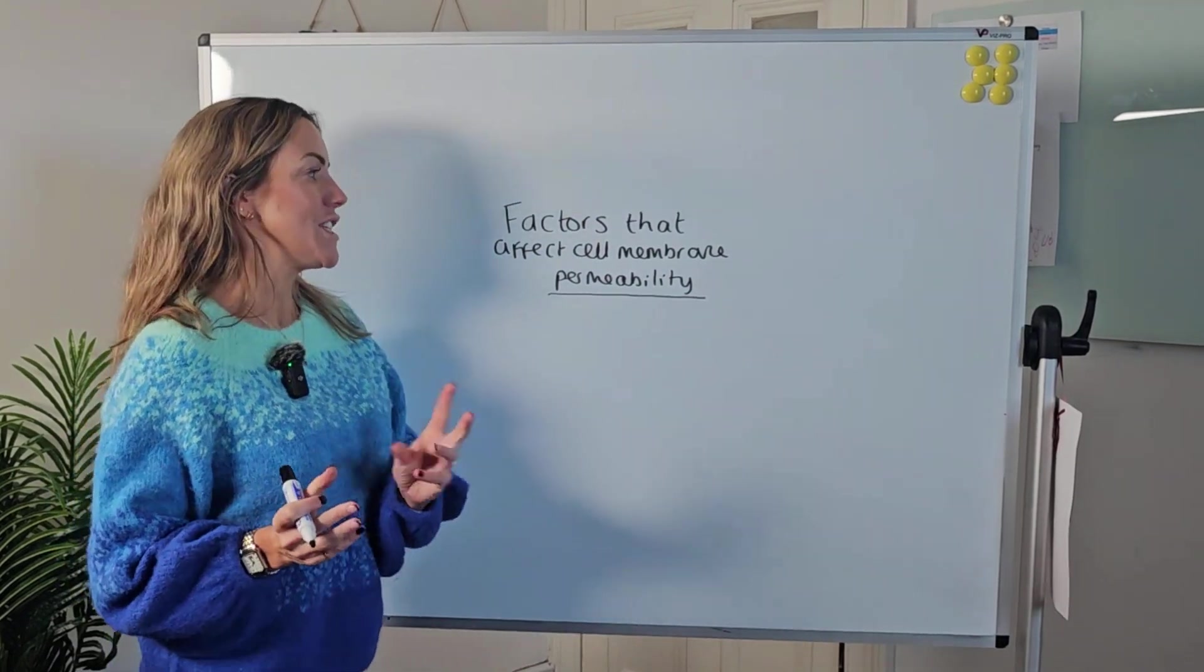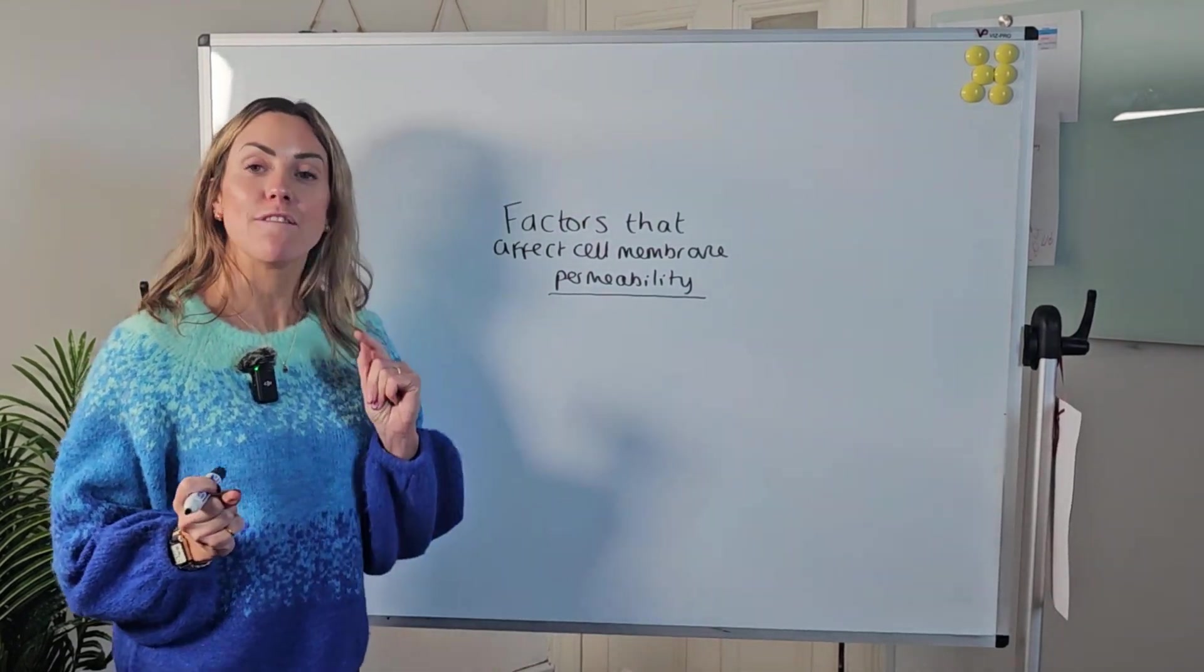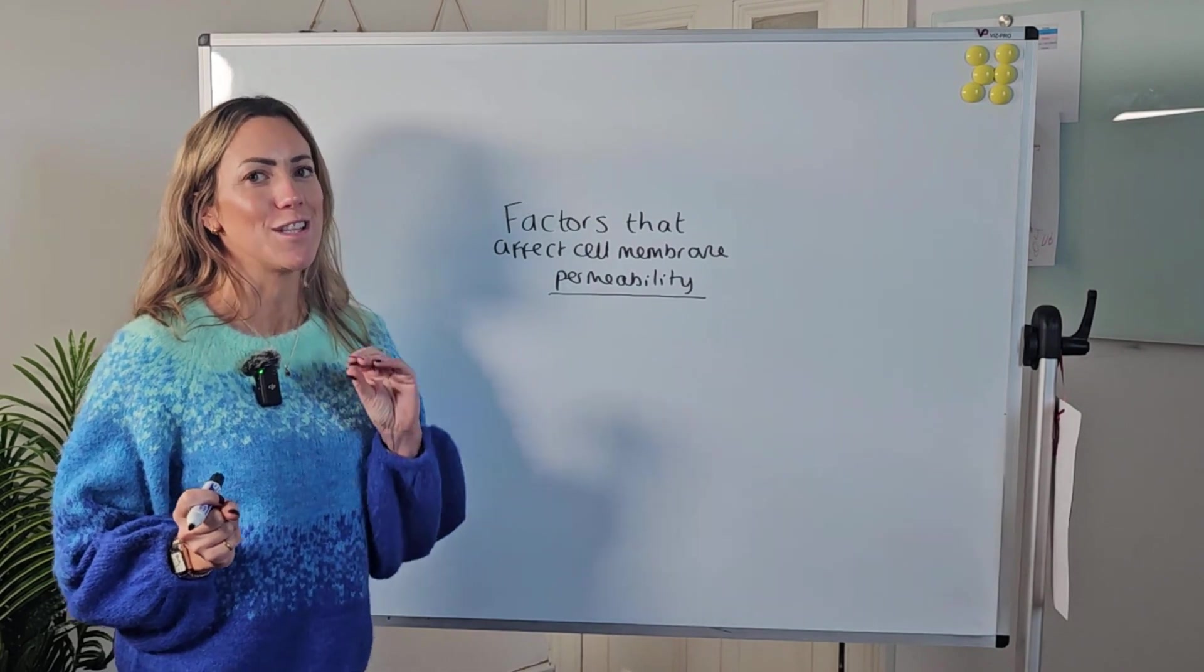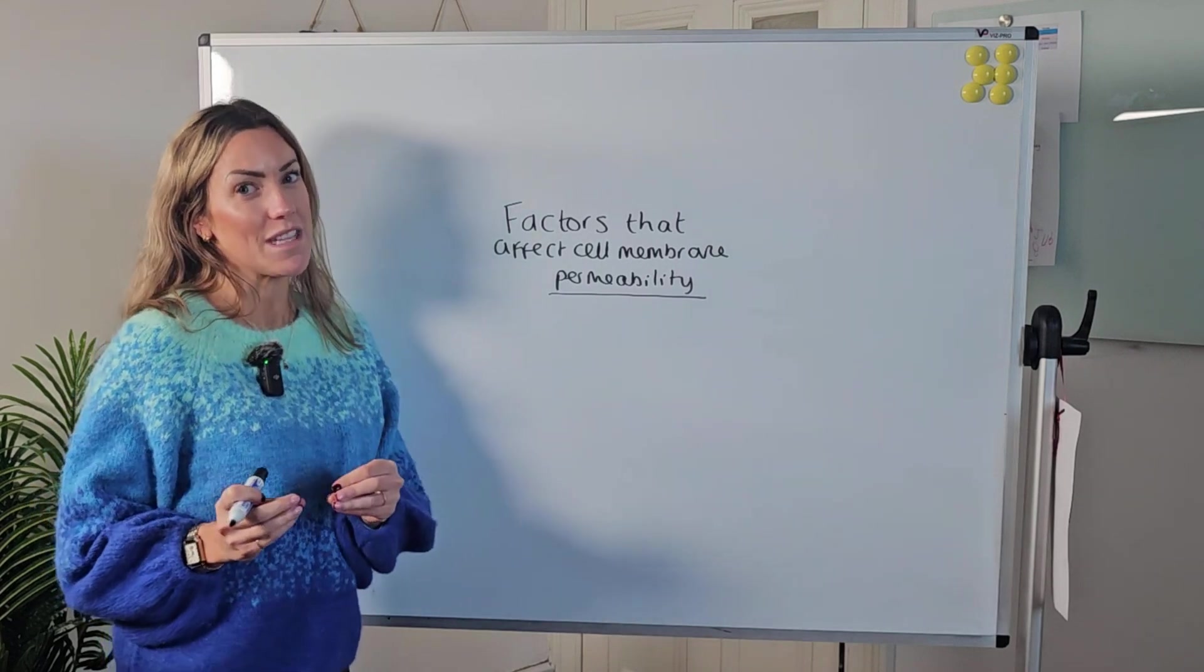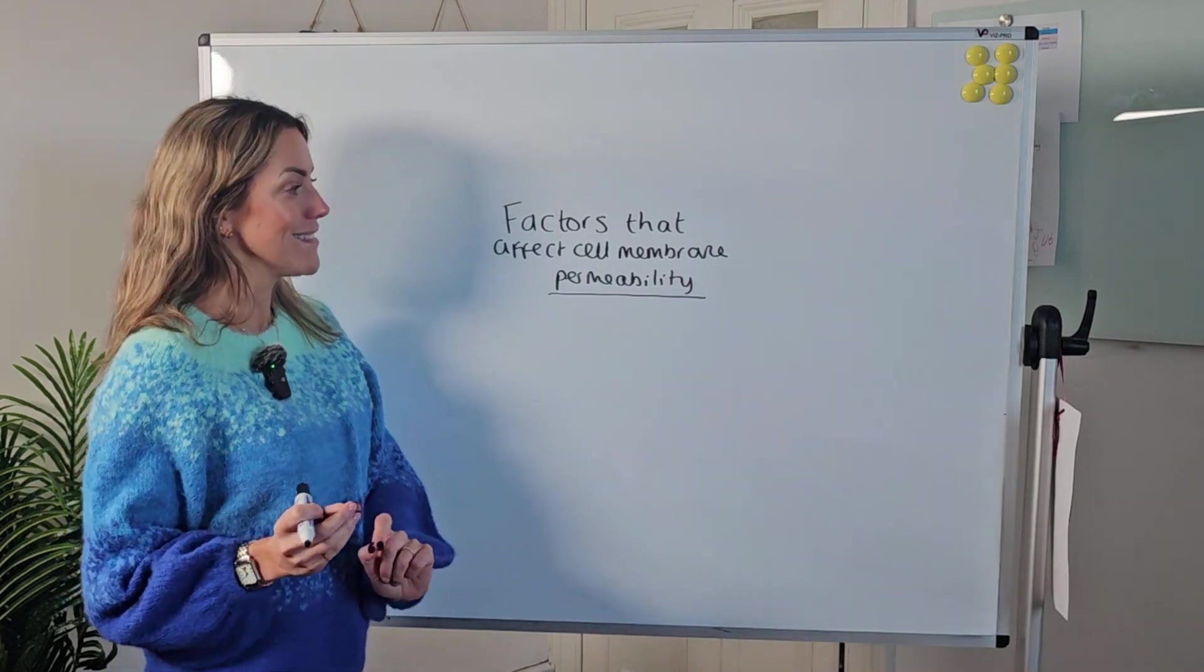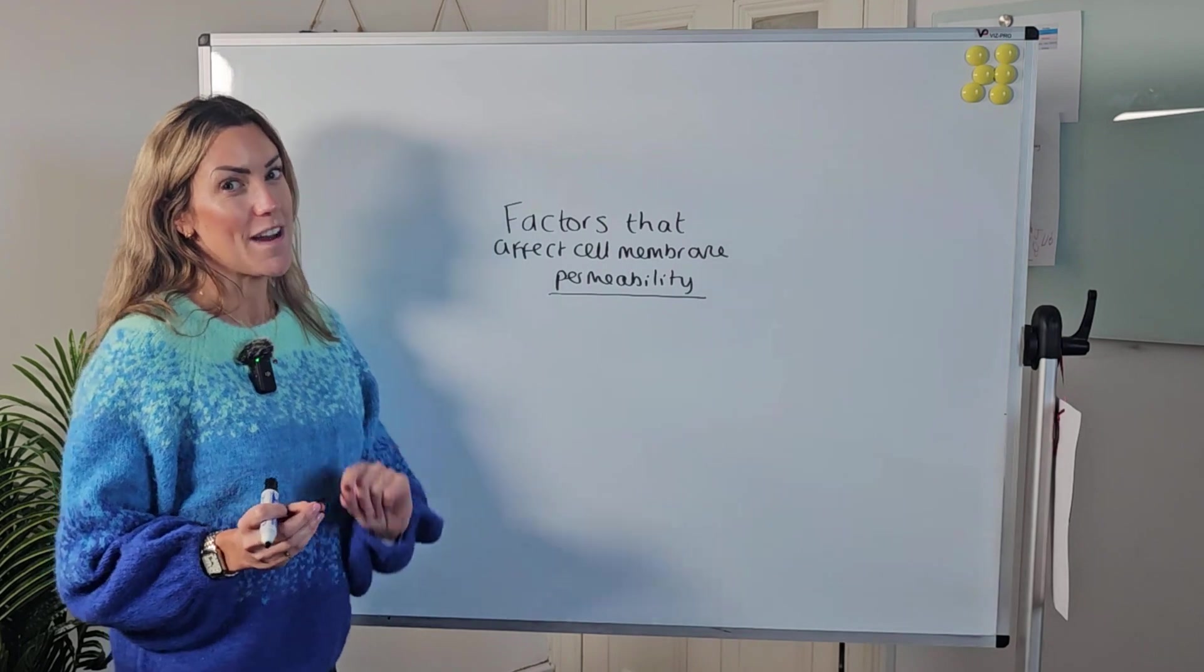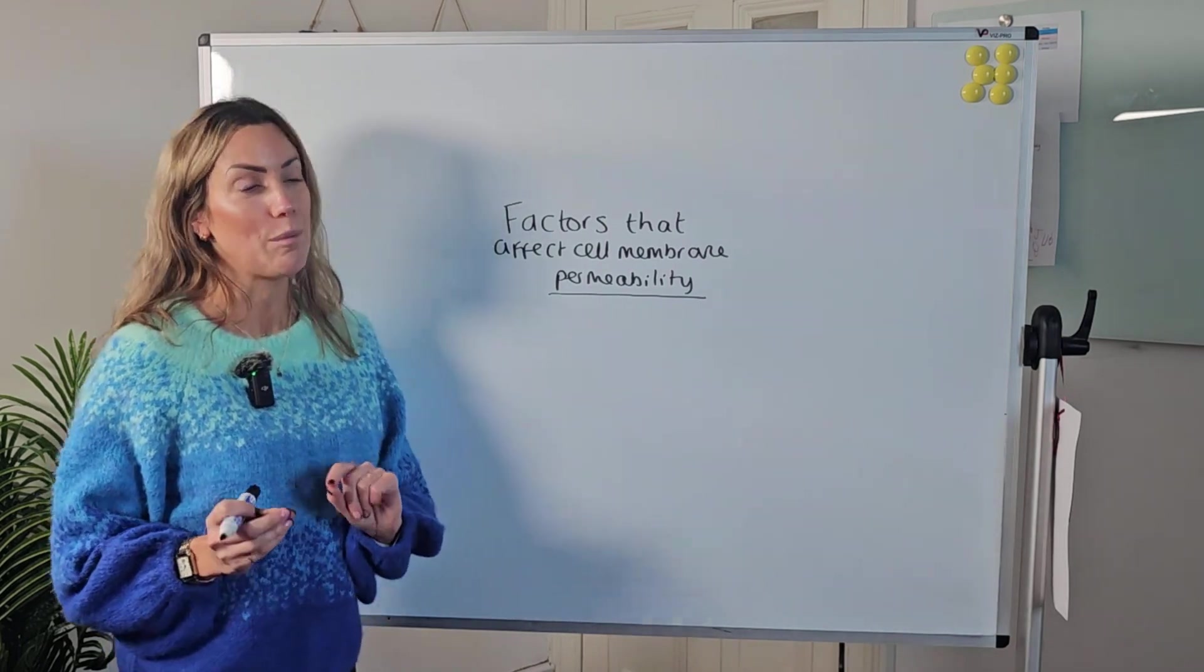This is a longer explainer video about the factors that can affect the permeability of the cell surface membrane. You might have done a practical investigating one of these factors using beetroot cells. Let's go through the possible factors that could come up on your A-level biology exam.